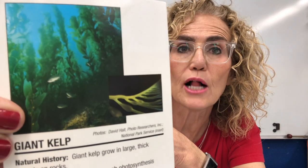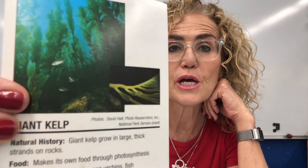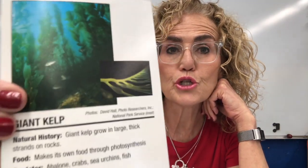So this one is giant kelp. Its history is that giant kelp grows in large, thick strands on rocks. Its food is that it makes its own food through photosynthesis, so that means it is a producer. And its predators are abalone, crabs, sea urchins, and fish. So this is a producer.